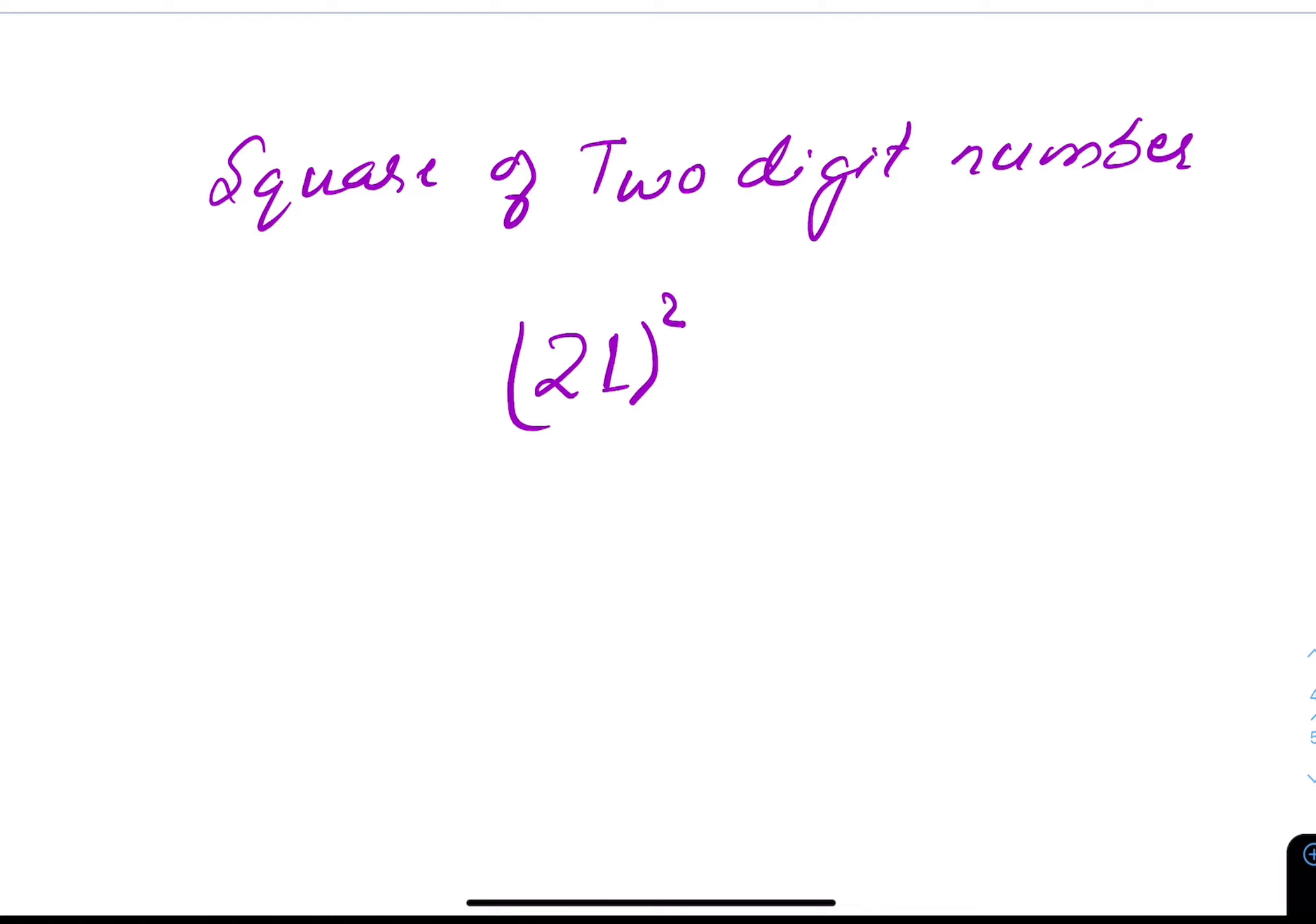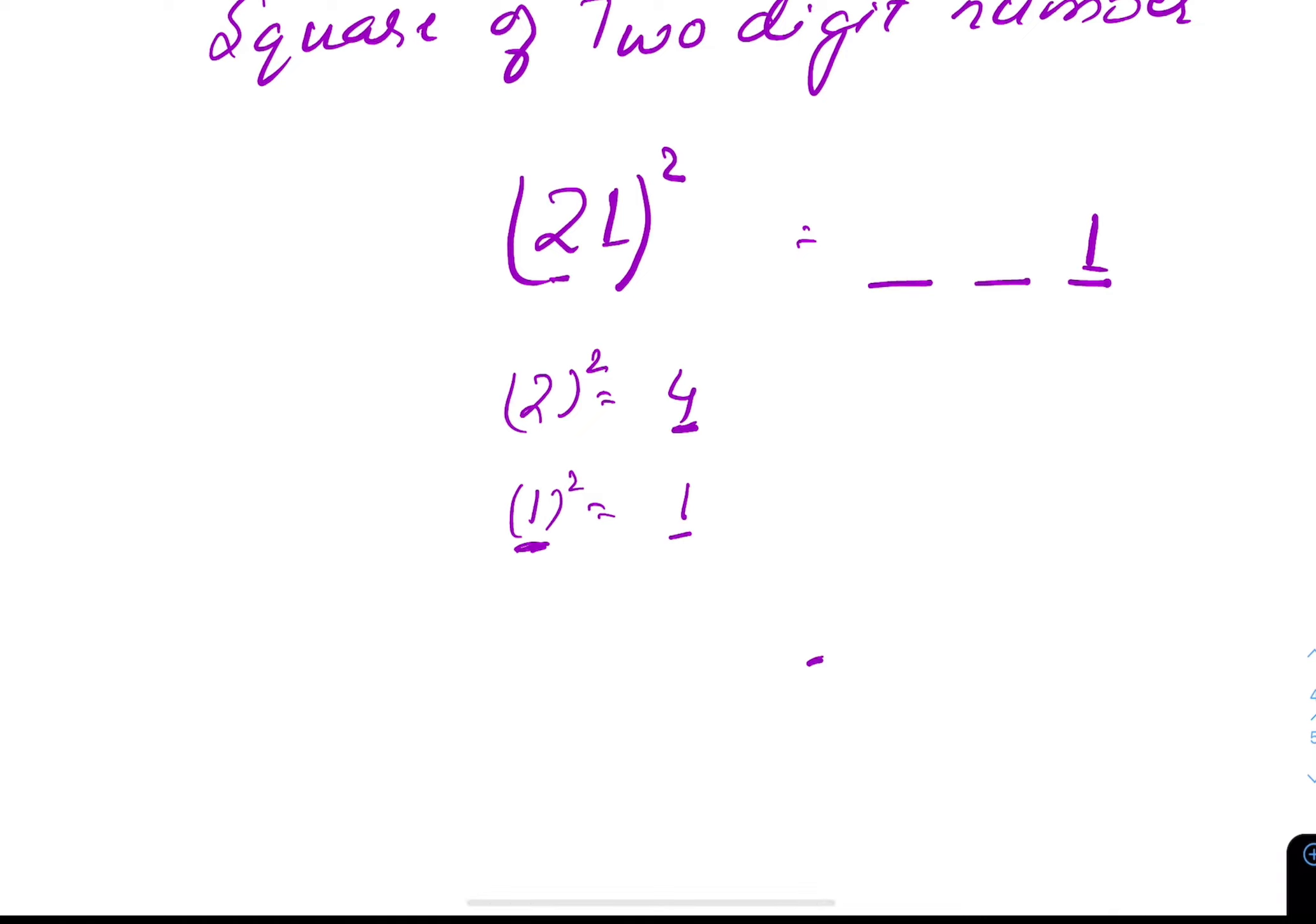What we will do is take the square of first digit 2. Write 4 here, then square of 1. Write 1 here. For the middle one we will multiply 2 into 1 into 2. That is 4. 441.